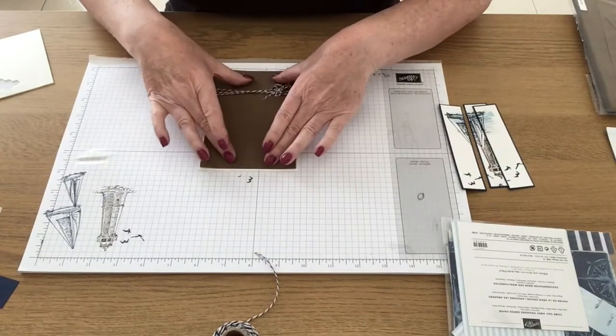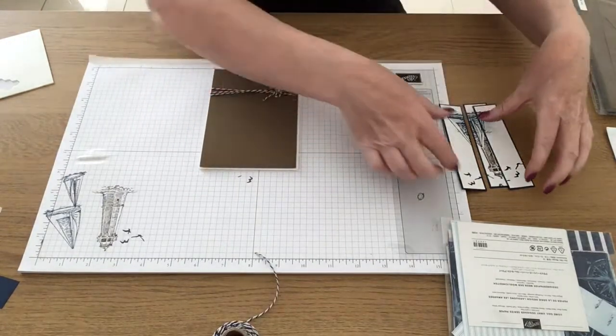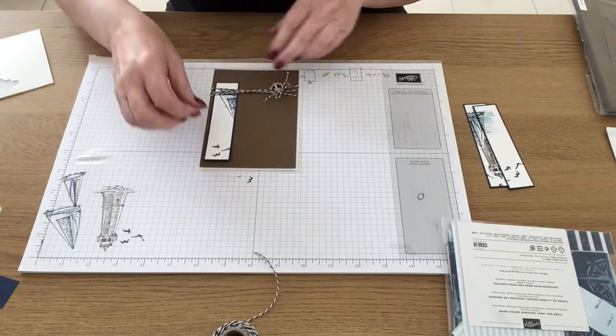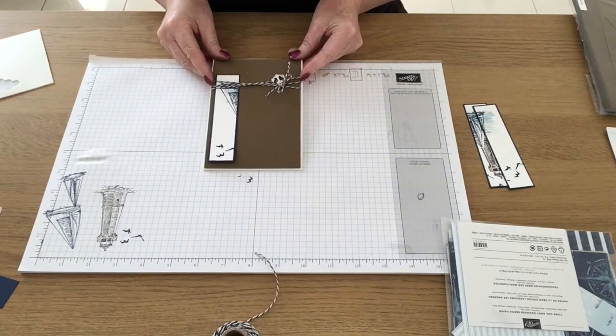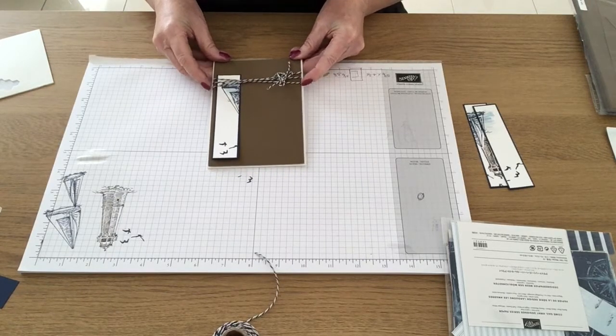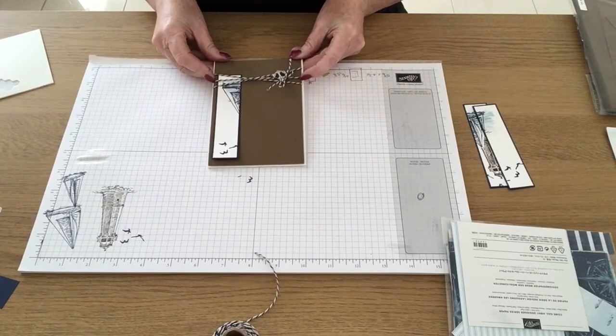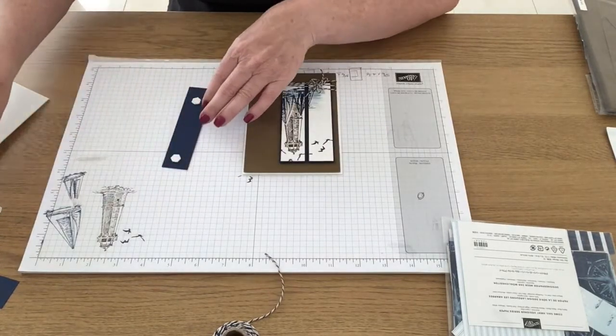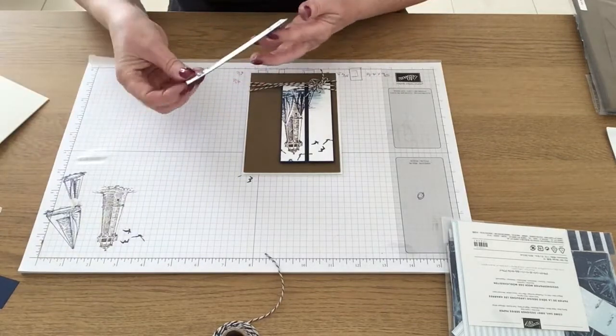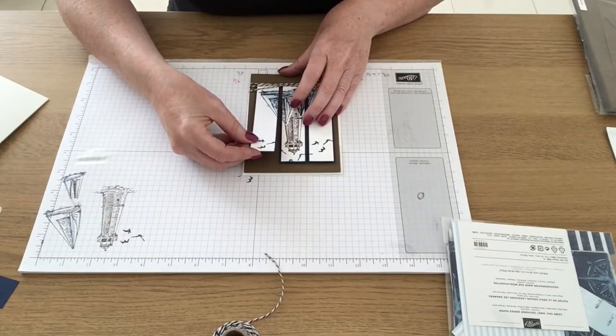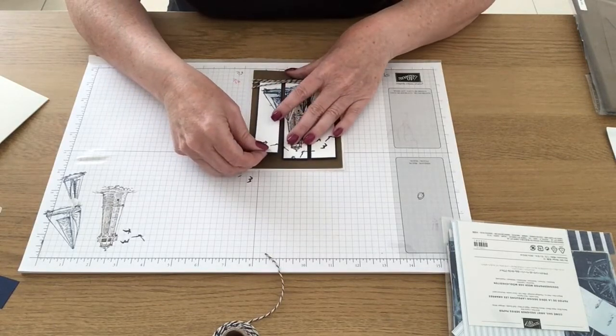So now I've got that into position I'm going to bring in my three stamped layers and I'm just going to position them with a small gap in between each one probably maybe a sixteenth or an eighth something like that. So again I'm just using dimensionals on the back of each one of the panels and I'm just going to position them in place on top of the soft suede.